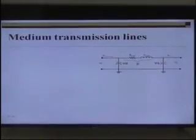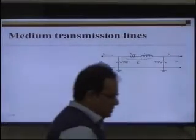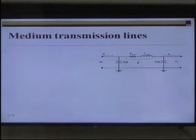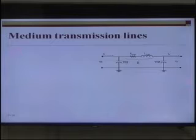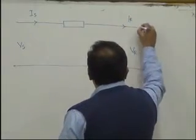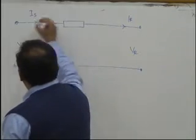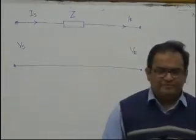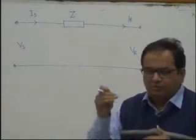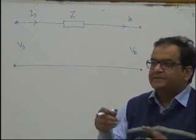In a short transmission line, our assumption was that the line parameter is lumped and it is Z. When we made a short line model, we said that we are using lumped parameters and that lumped series impedance of the line is Z, and we are ignoring the admittance between the lines because the length of the line is short and the admittance can be ignored.